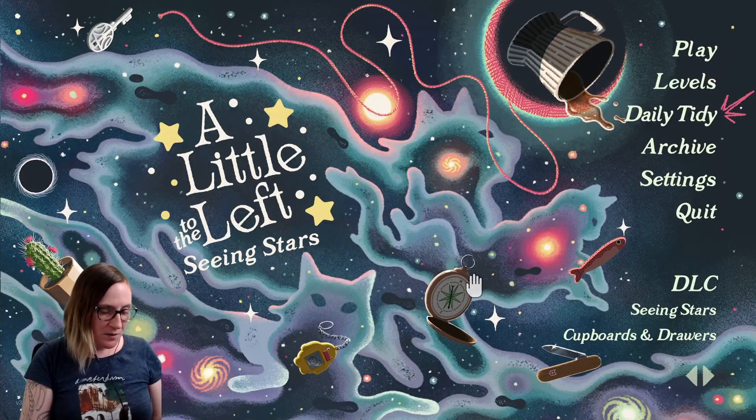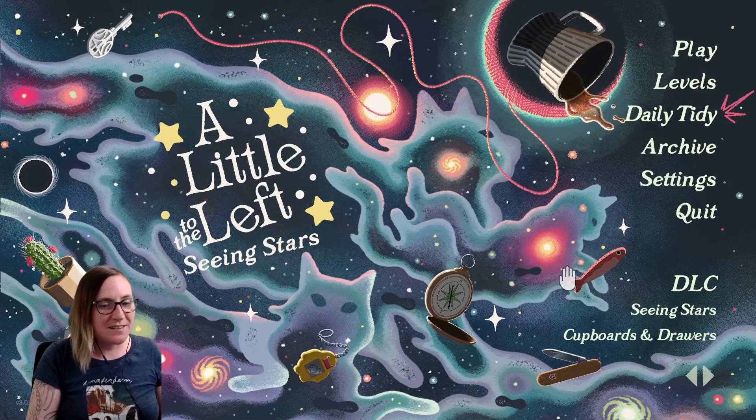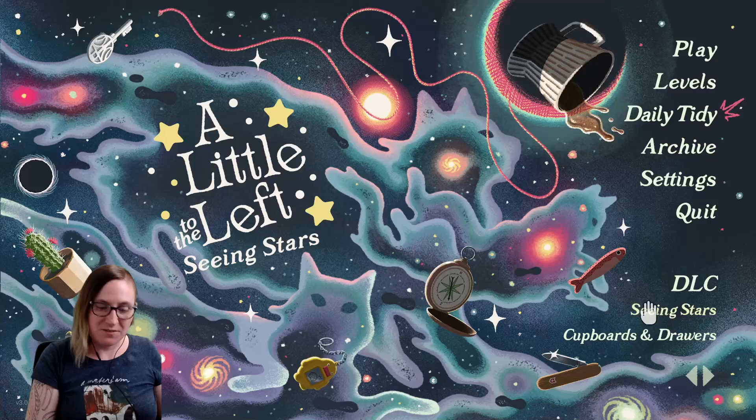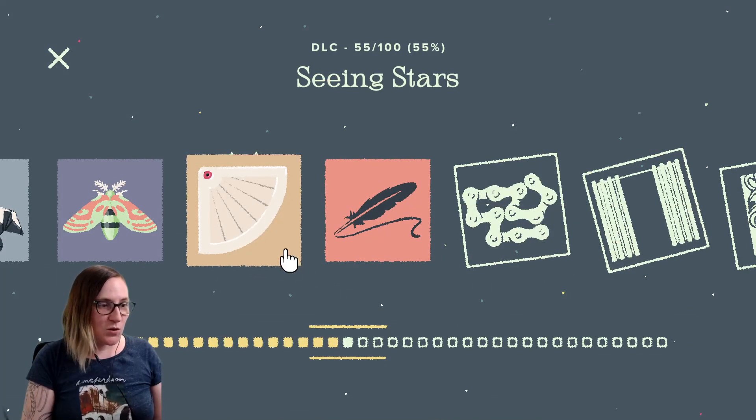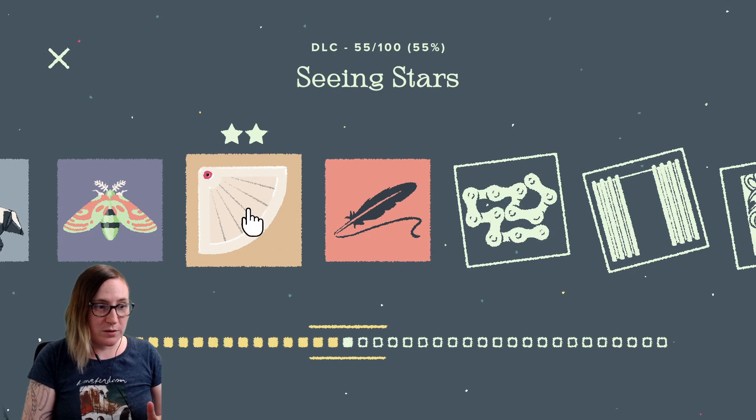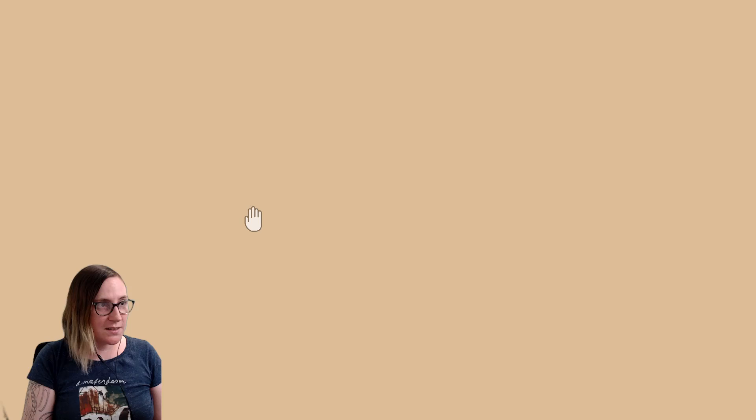Hello everyone and welcome back to Seeing Stars DLC for A Little to the Left. Today we're going to do puzzle 17 which has two solutions. It's a little pencil box.